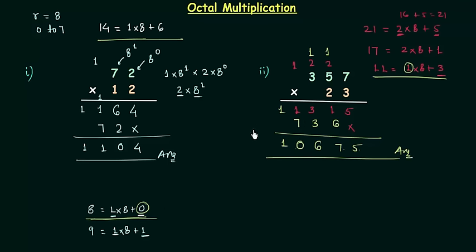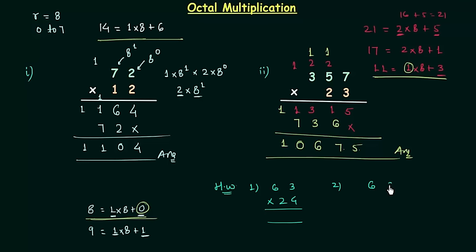I hope you now know how to multiply two octal numbers. Now we will move to the homework problems. In the first homework problem you have to multiply 63 by 24. In the second homework problem you have to multiply 635 by 55. So this is all for this presentation. See you in the next one.